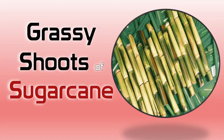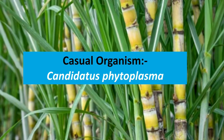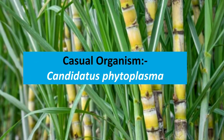Next is grassy shoots of sugarcane. This disease is caused by Candidatus phytoplasma.